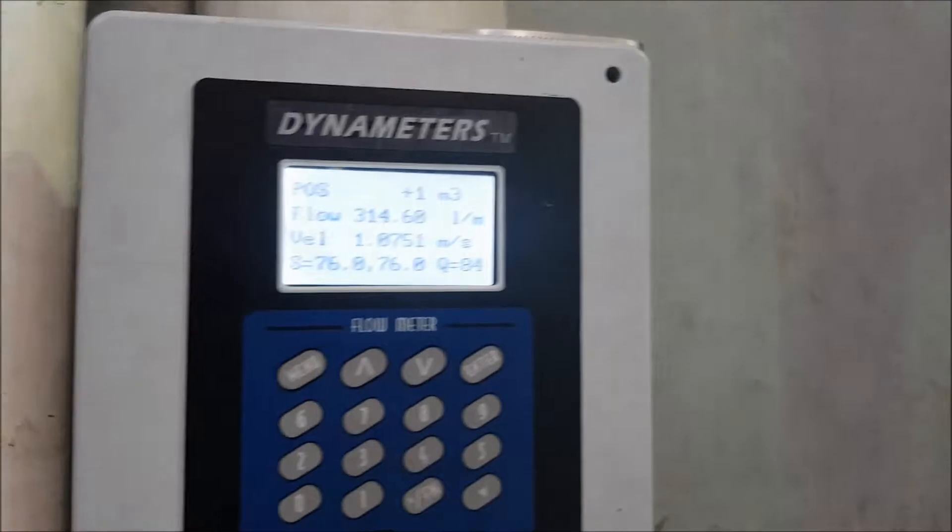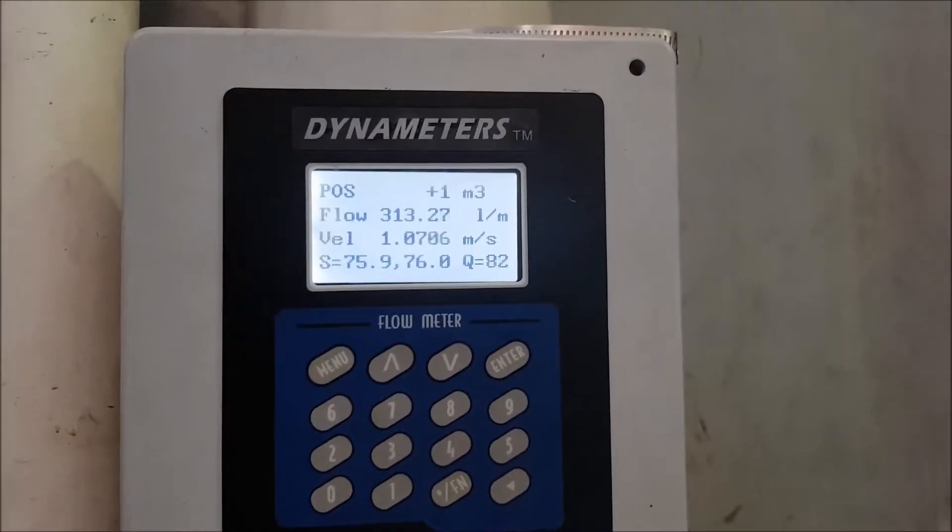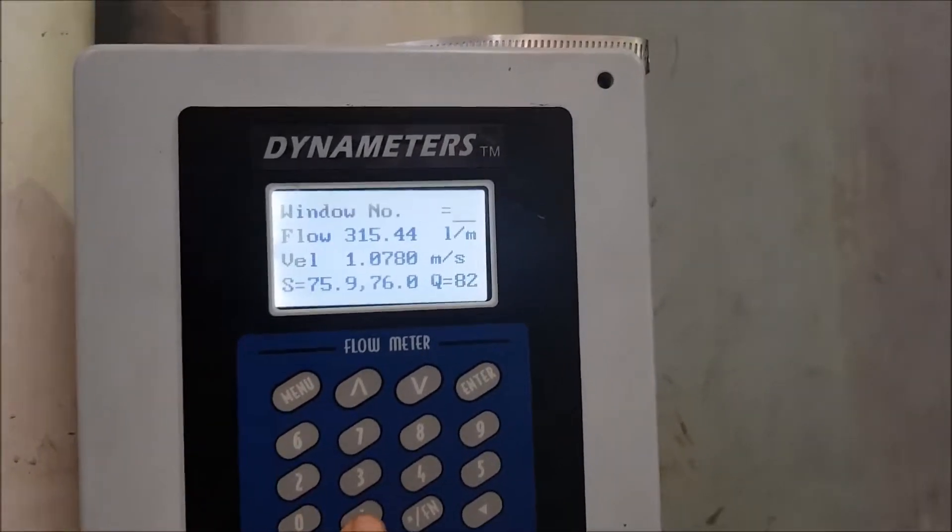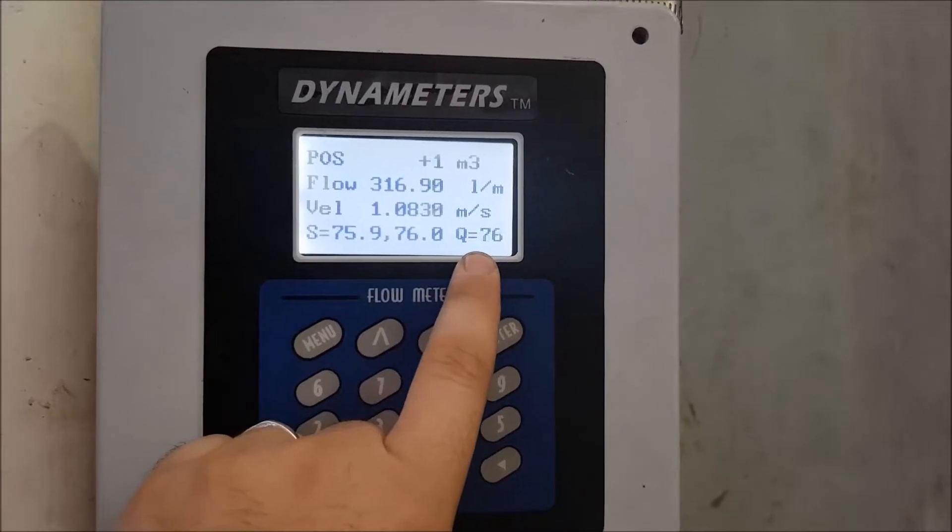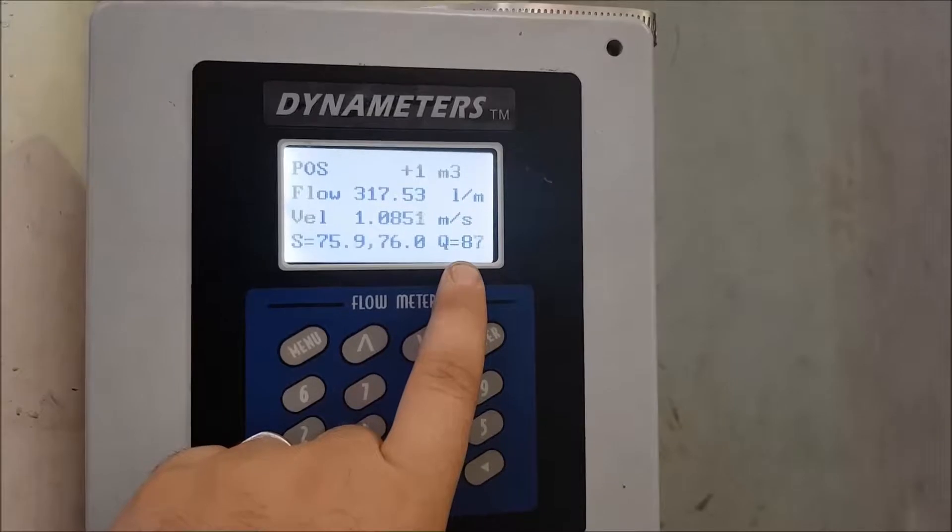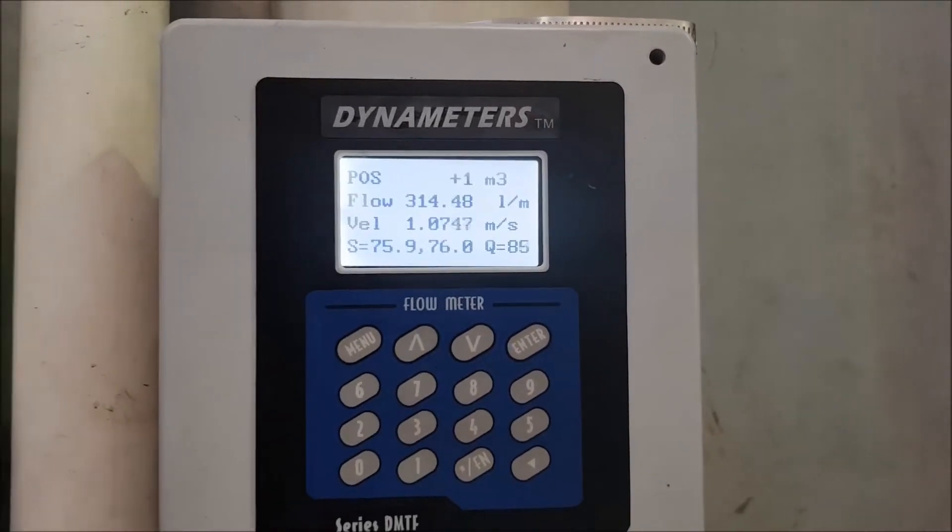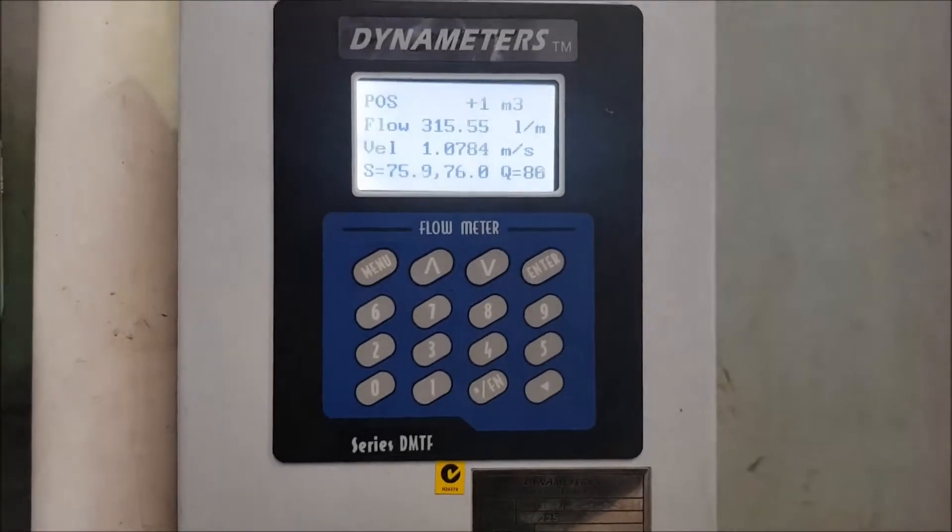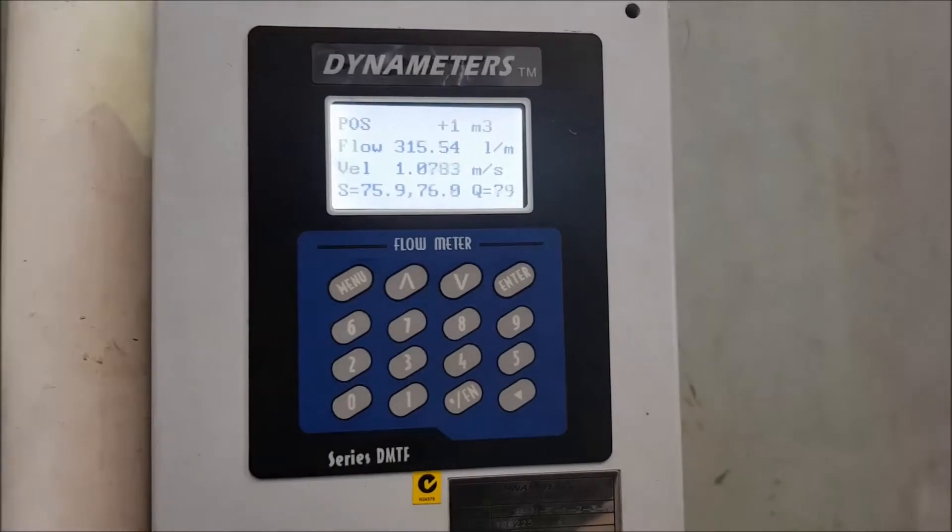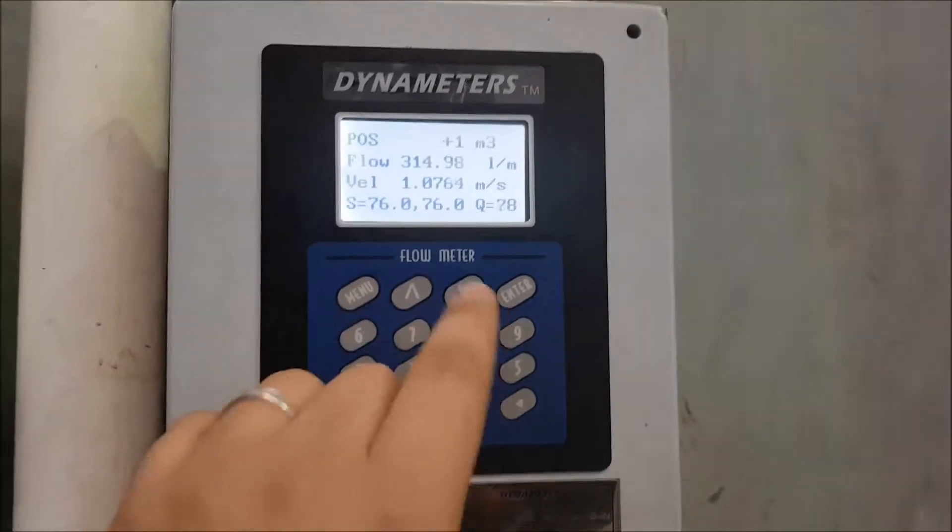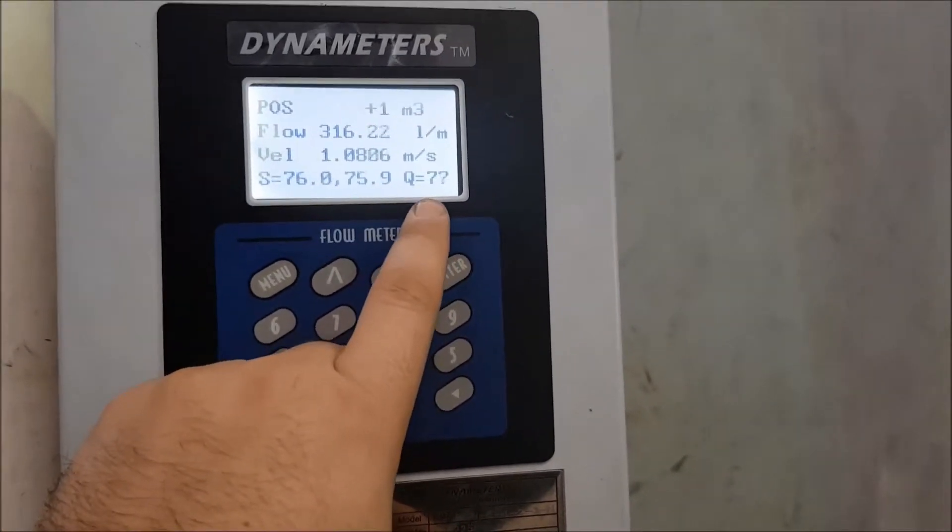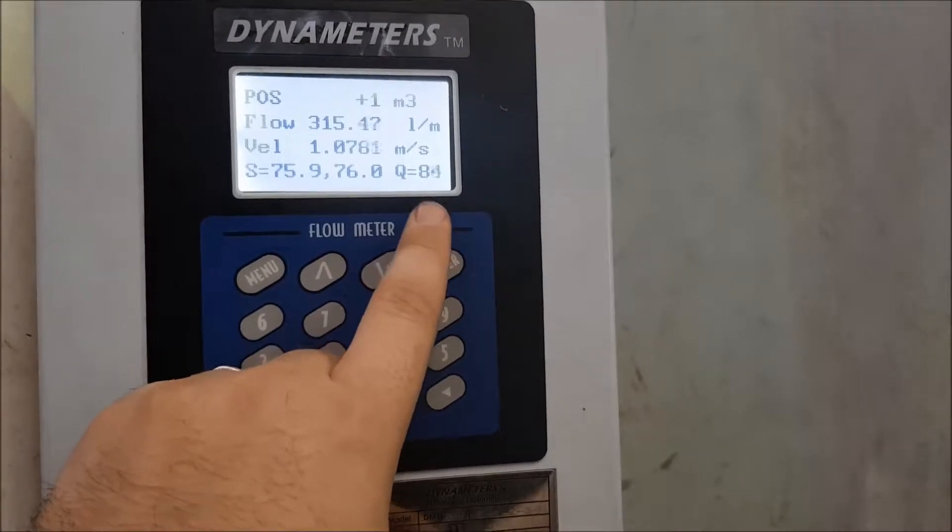Okay, so now that the transducers are installed, we move back to the unit. Now there's a few things we need to check to make sure everything is correct. Namely this Q value on menu one. So on menu one, it shows this Q value. Now you want to make sure that this value is 60 or higher. Now if it is lower than 60, then you should go back and recheck your installation. Make sure you've got plenty of grease on there. Make sure there's no rust on the pipe. Make sure the pipe is full. It's basically saying that the signal quality coming through is not good if it's less than 60. So we're looking okay here.